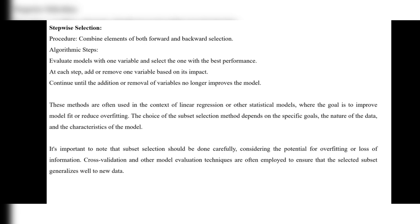These models are often used in the context of linear regression or other statistical models, where the goal is to improve model fit or reduce overfitting. Irrelevant or misused data can be easily removed by subset selection. The choice of subset selection method depends on the specific goals, the nature of the data, and the characteristics of the model. It is important to note that subset selection should be done carefully, considering the potential for overfitting or loss of information. Cross-validation and other model evaluation techniques are often employed to ensure the selected subset generalizes well to new data.